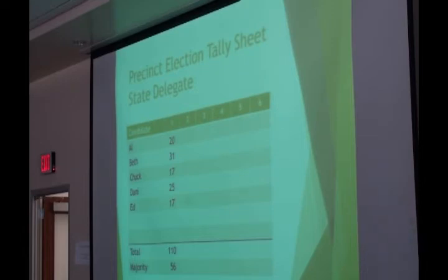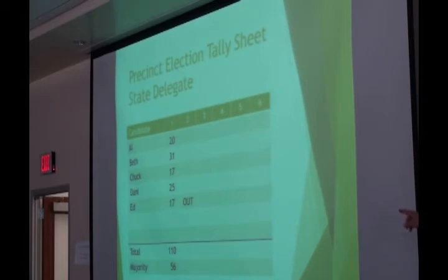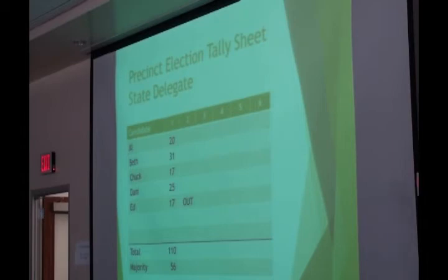Ed lost the coin toss. So we take the ballots cast for Ed and distribute them among the four remaining candidates. The 17 ballots whose first preference was Ed — you look at the second preference on those ballots, and those 17 ballots are distributed among Al, Beth, Chuck, and Danny according to the second preference.